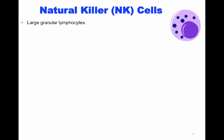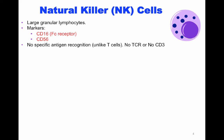Natural killer cells are large granulocytes. They have two main markers, CD16, an Fc receptor, and CD56, both on their surfaces. Unlike T cells, natural killer cells are not specific for antigen recognition. They have no TCR or CD3.